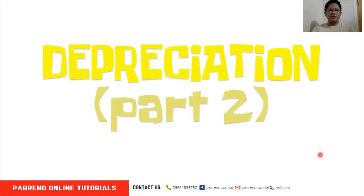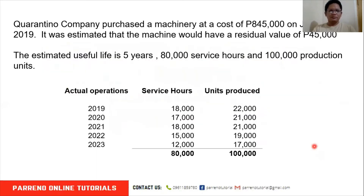Previously, we discussed the straight line method, production or output method, as well as using the expected number of hours in allocating the cost of the asset over its useful life. This time, we will be discussing other methods, particularly the sum of the years digit method. We will be using the same problem so that it's easier for you to compare the difference between those previously discussed methods.